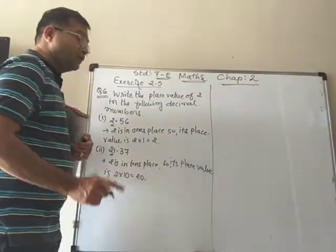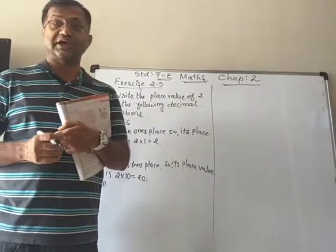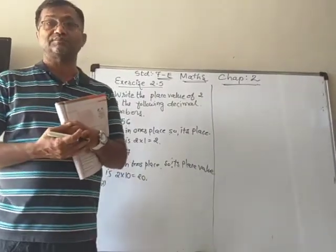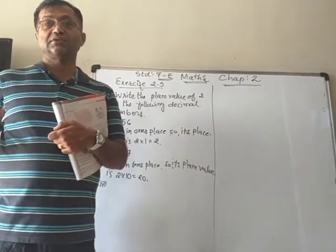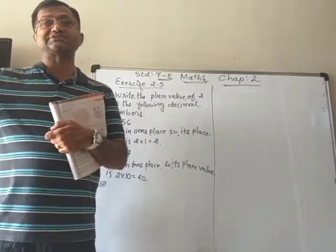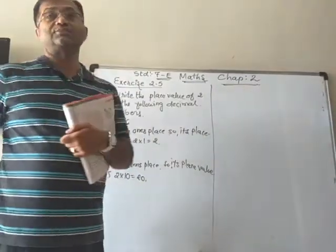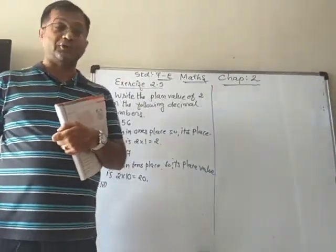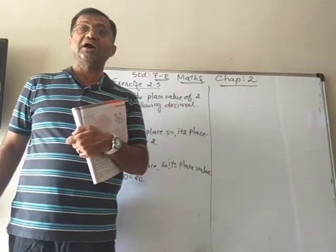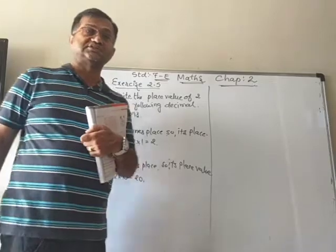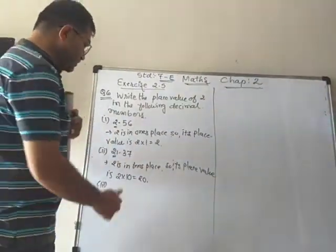Before we know the place value, we must know the place at which the digit is located. On the left side, starting from the 1's place: 1's, 10's, 100's, 1000's, and so on. On the right of the decimal point, the places are tenths, hundredths, thousandths, etc.